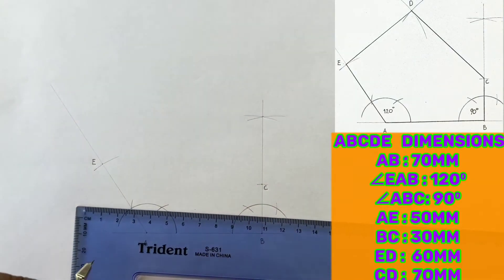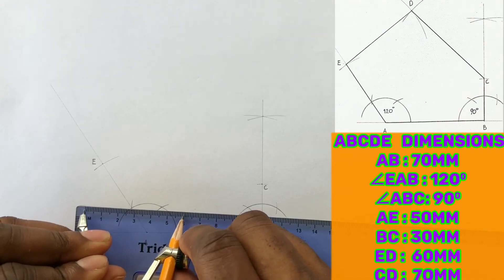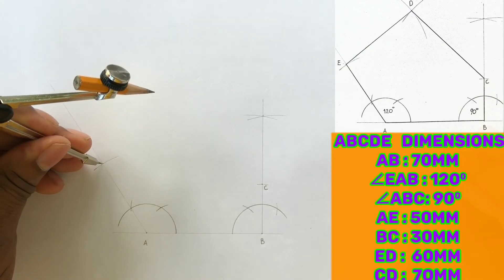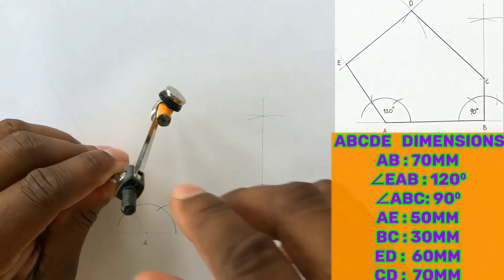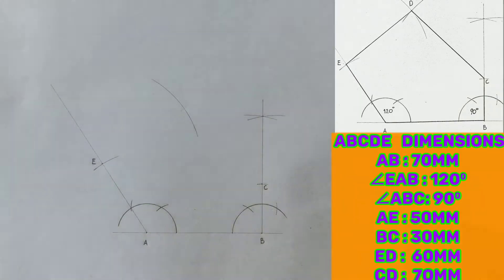Now open your compass to a radius of 60 millimeters, and from point E scribe an arc. This arc is one of two that will help to give us point D.